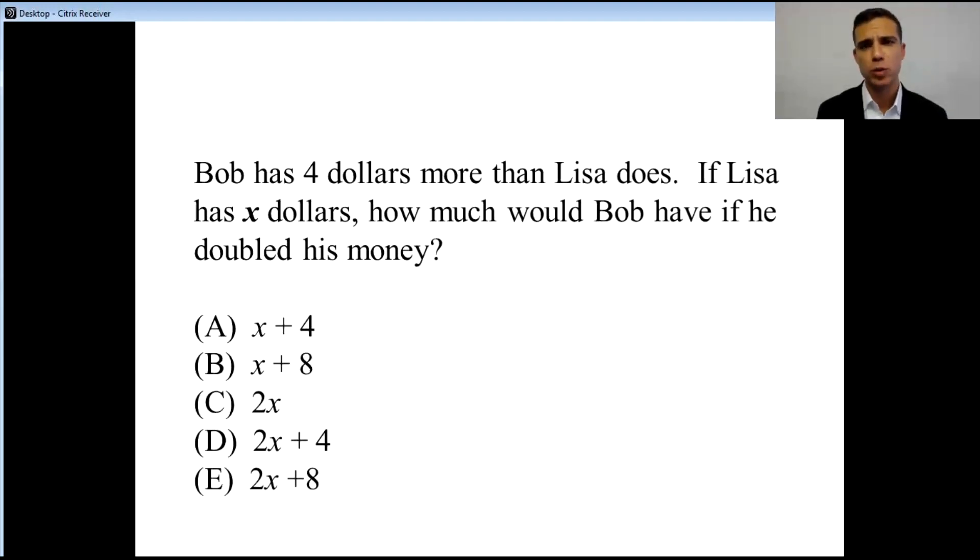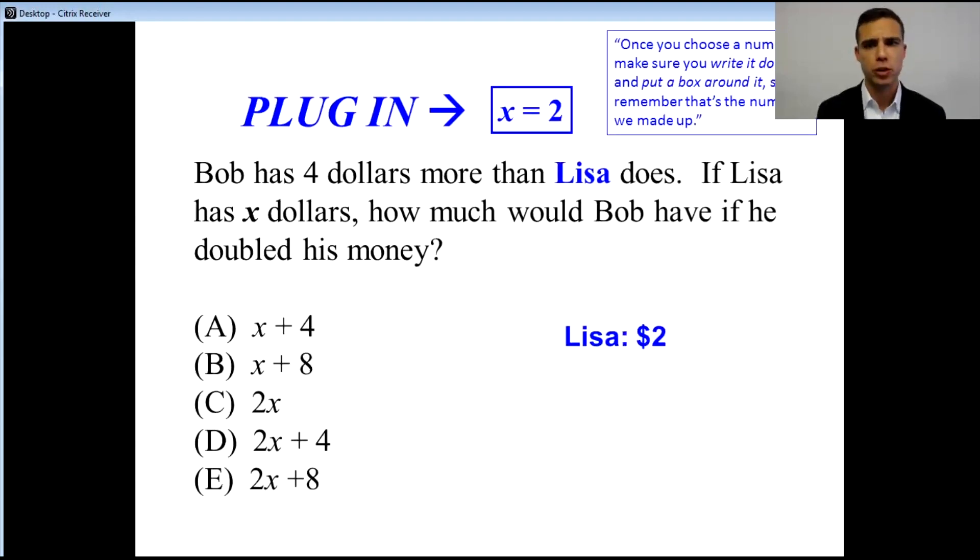Let's say that X equals 2. Once you choose a number, the Book of Knowledge reminds us that you should put a box around it so that we don't forget what we're using.